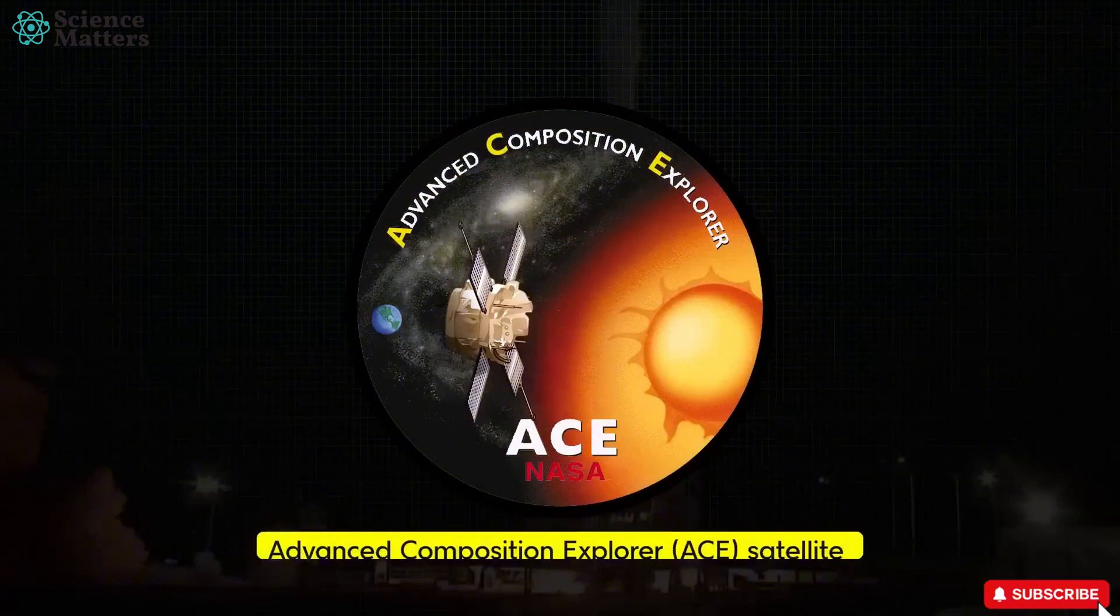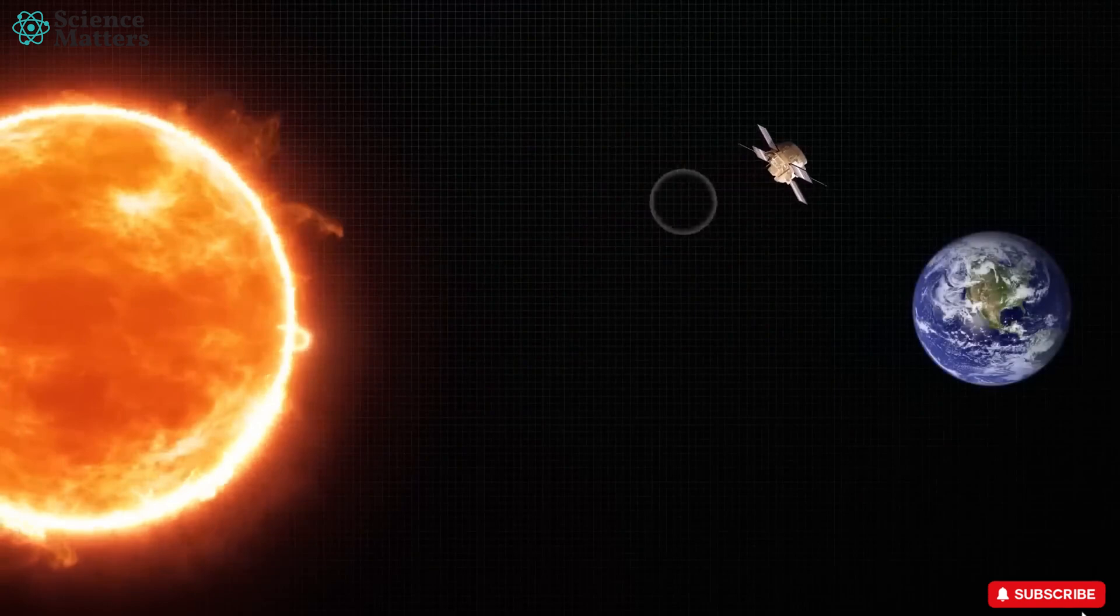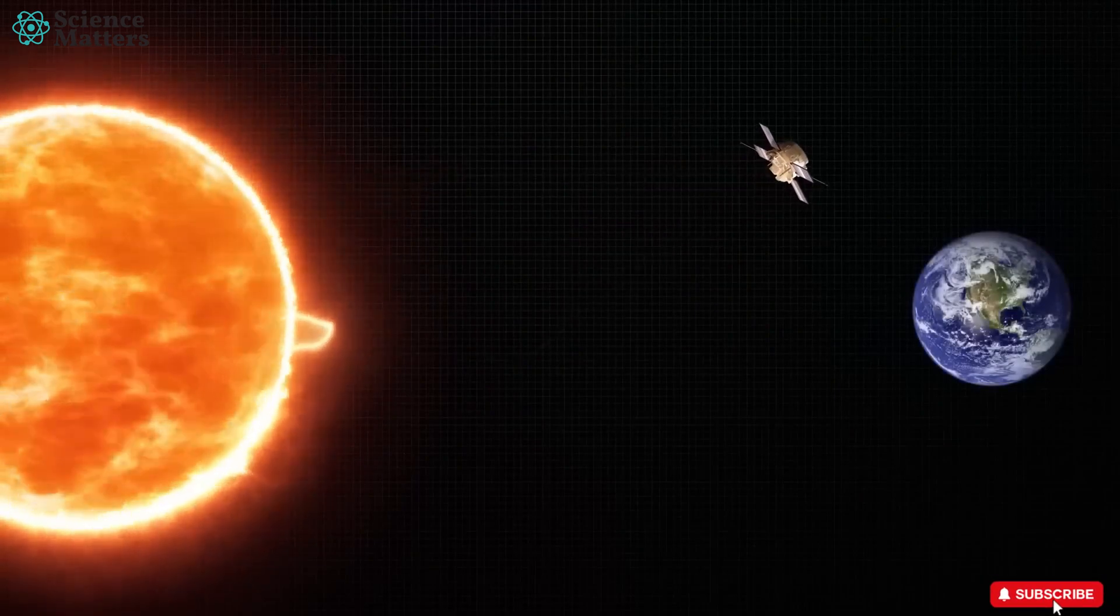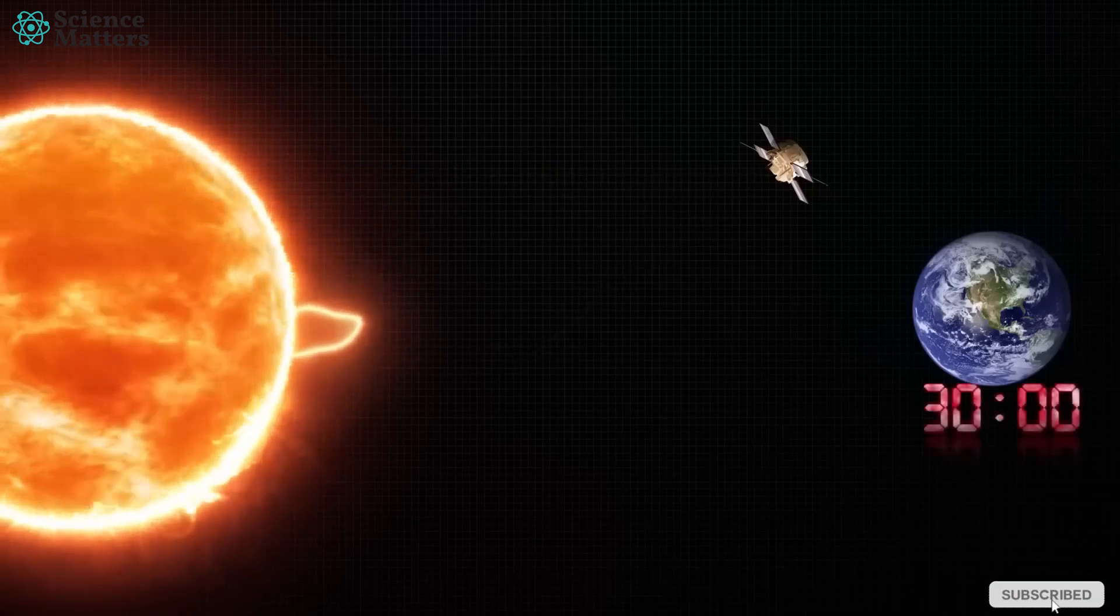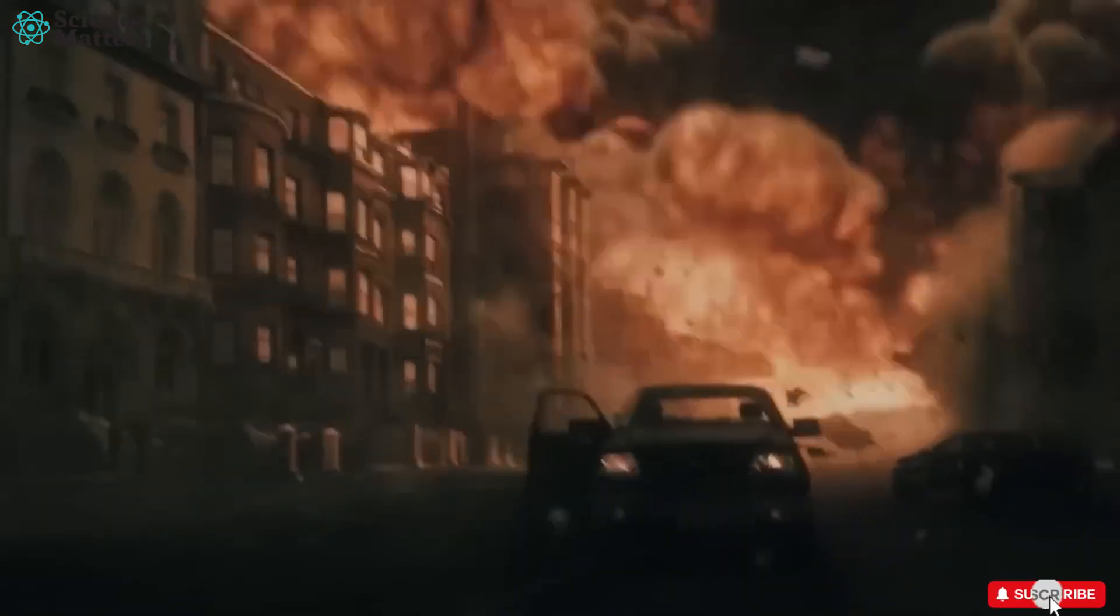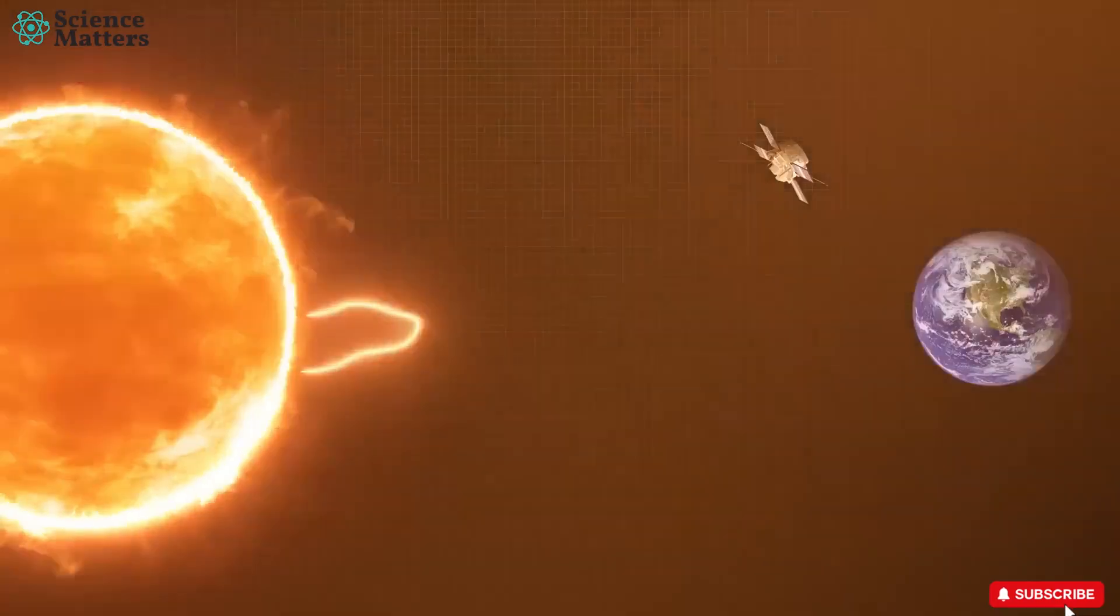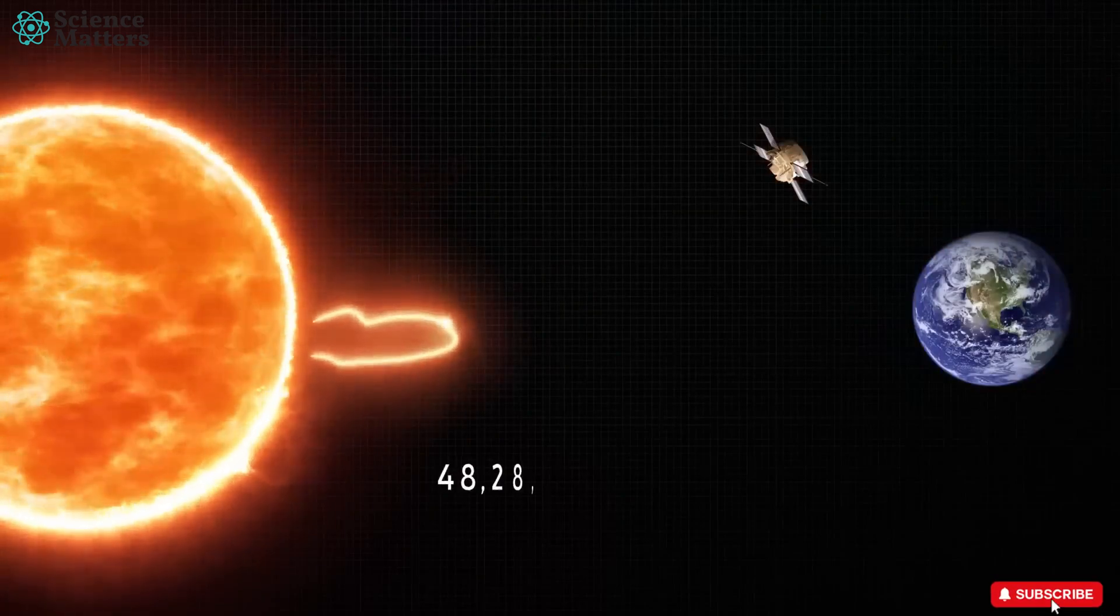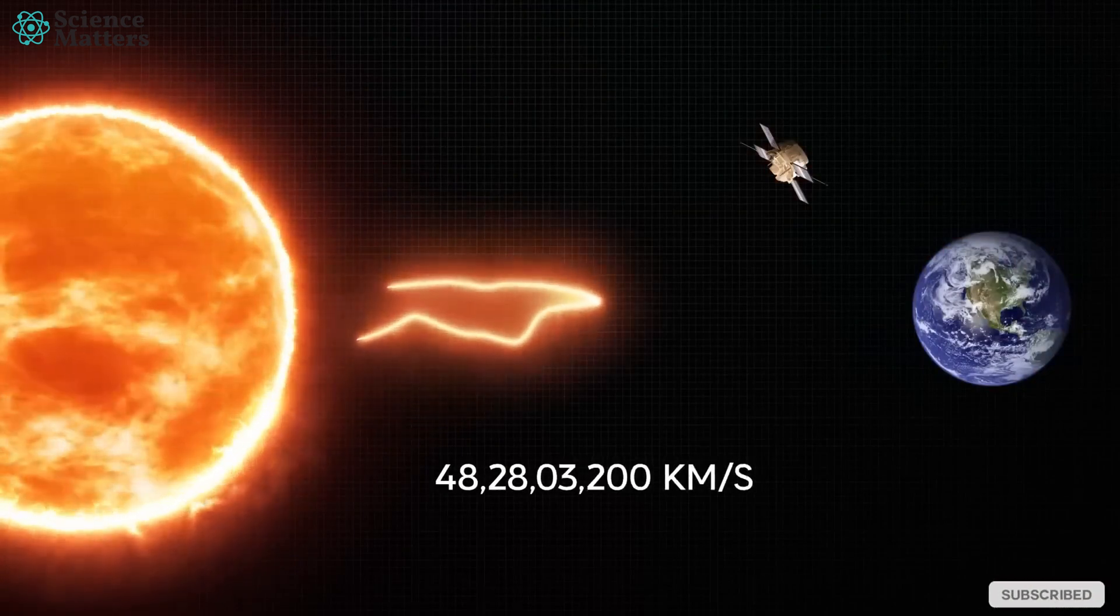NASA has launched the Advanced Composition Explorer, ACE satellite, to study solar flares and radiation from the sun. But as soon as the satellite detects a solar flare and transmits the information to us, we will have only 30 minutes to save Earth, which is next to impossible given the speed of this solar flare. According to calculations, this solar flare is expected to hit Earth at a minimum speed of 48 crore 28 lakh kilometers per second. The normal speed of solar flares is already very high.